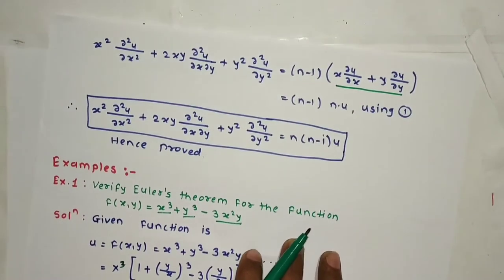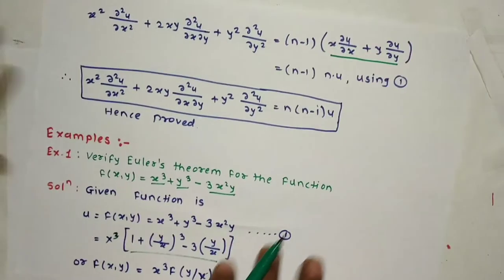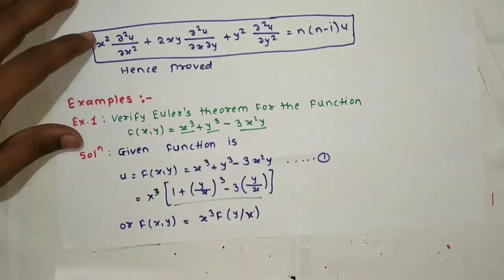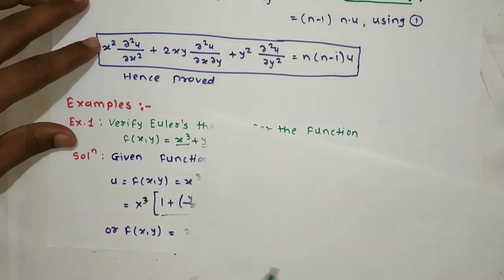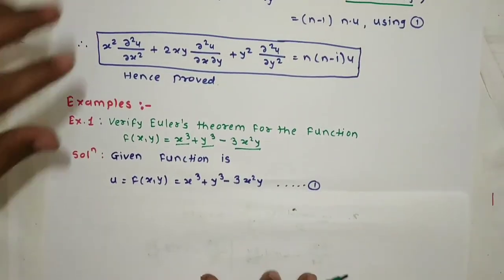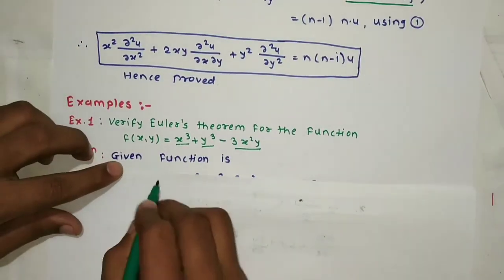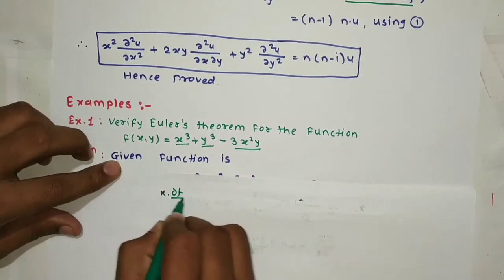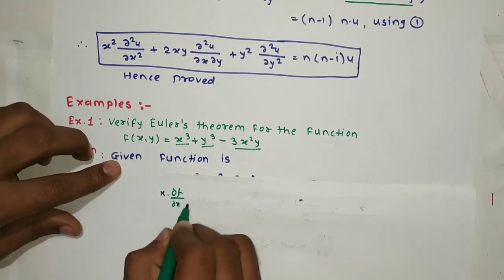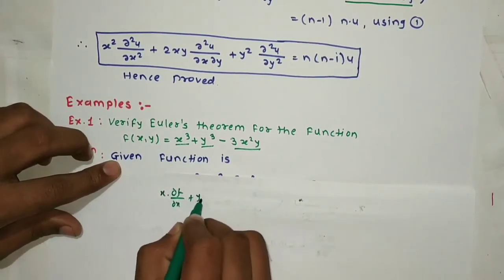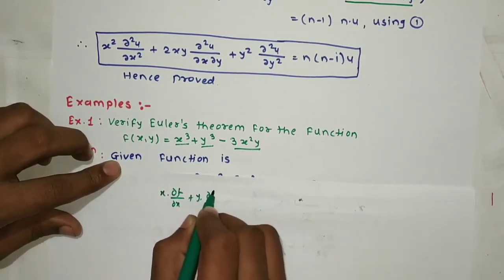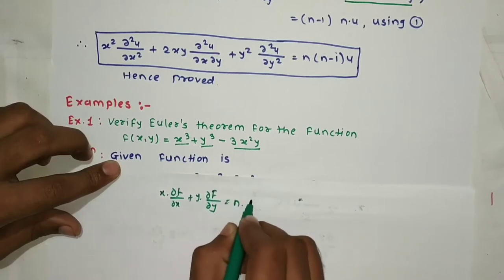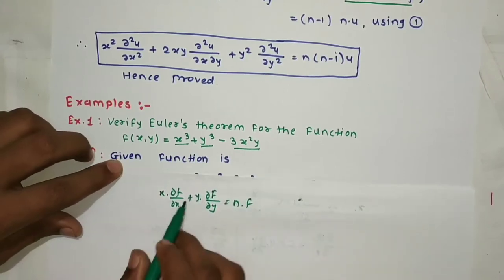Now let's start with the examples. Verify Euler's theorem. Euler's theorem states: x · ∂f/∂x + y · ∂f/∂y = n · f.